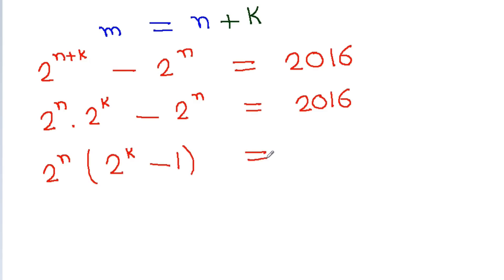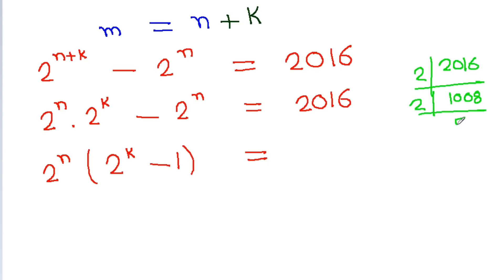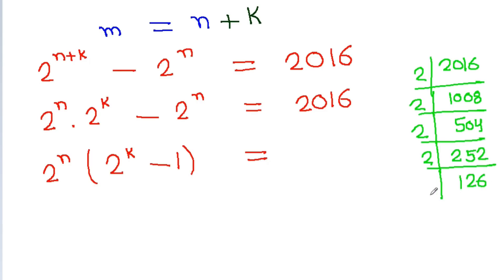Now if we factorize 2016, we get: 2016 = 2 times 1008, 2 times 504, 2 times 252, 2 times 126, and 2 times 63.